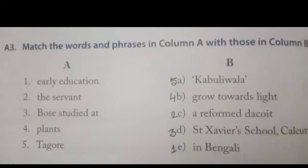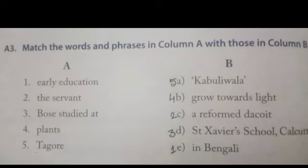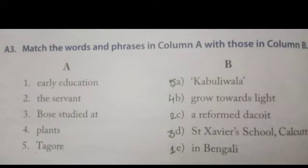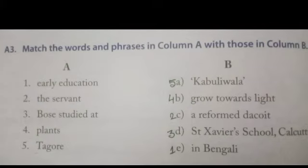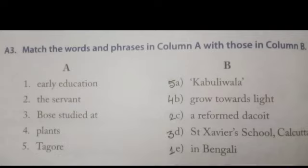So children, the answers are: number 1 — E, number 2 — C, number 3 — D, number 4 — B, number 5 — A. These are the exercises completed today. You have to write neatly with pencil in your textbook. Two questions and answers I will write in your class notes next class. Bye children.